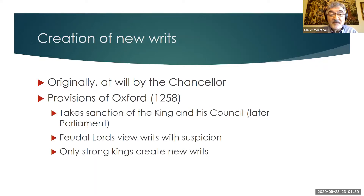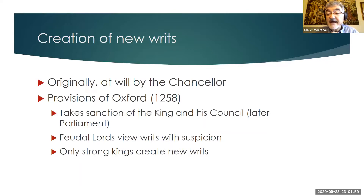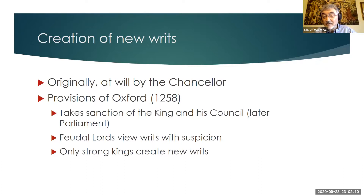One answer to the problem was to create new writs. Originally, that was not much of a deal because writs were created at will by the chancellor. When the chancellor identified a gap where there was no avenue to the court, he just created a new writ. But every time the chancellor created a new writ, it was legal business taken away from the local courts and the manorial courts, where lords were making money out of justice. And that generated some resistance.